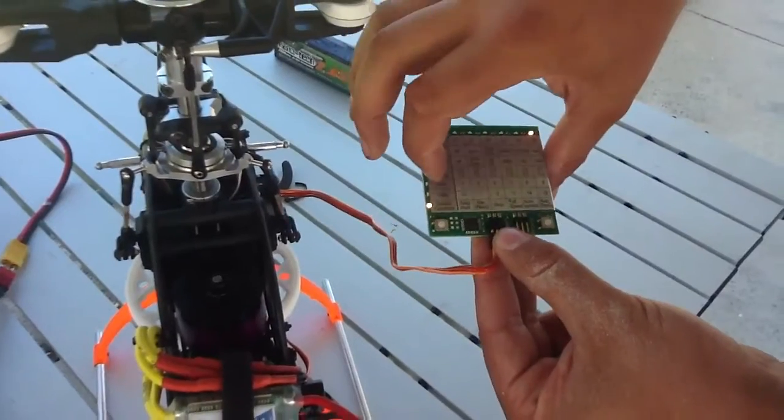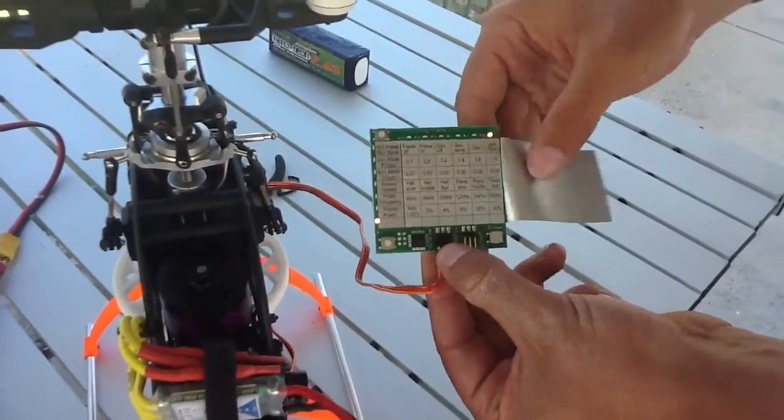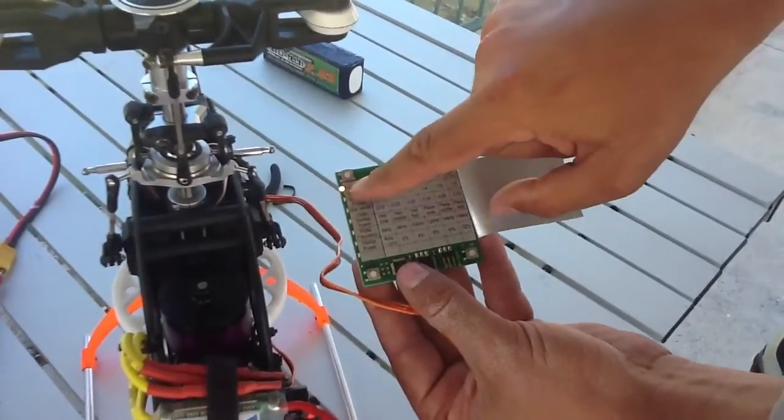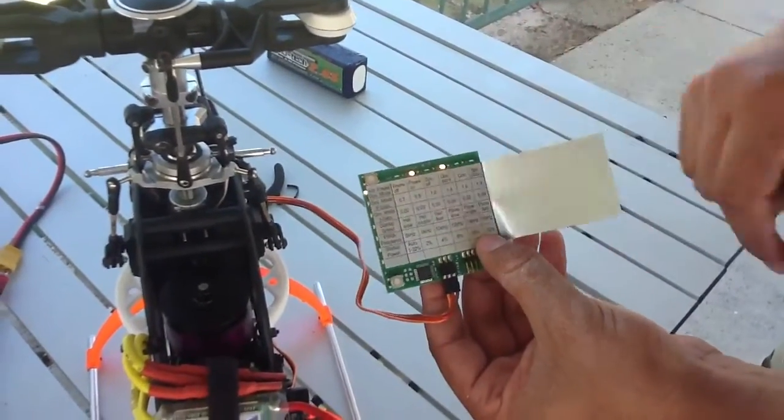So then once you've programmed that side of the page, to get to page two, you push these two buttons together, and you'll see now the light on the left will start flashing, which means you're on page two.